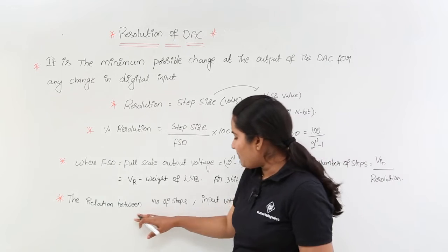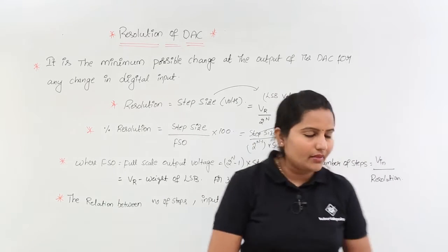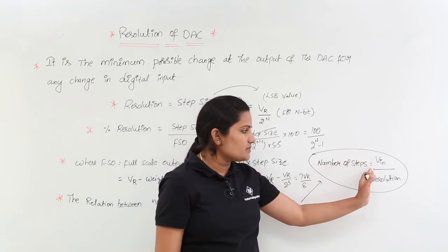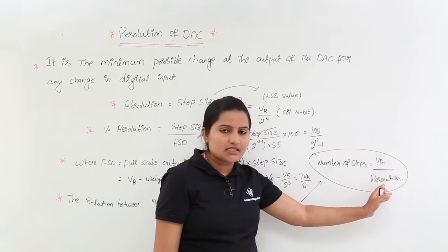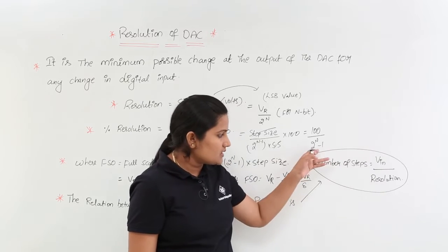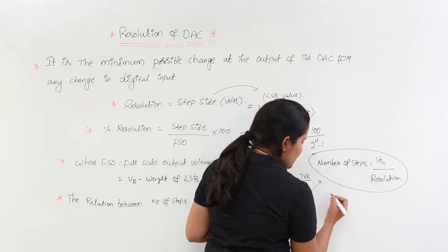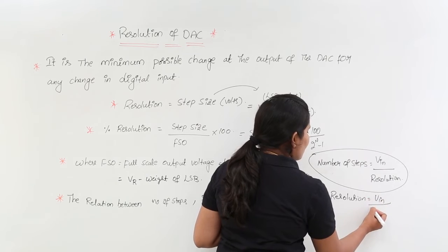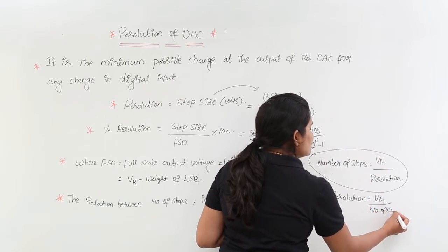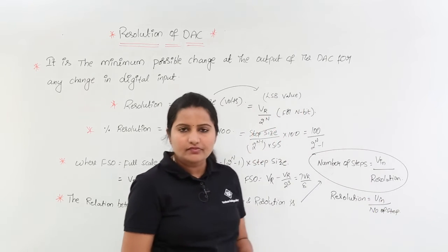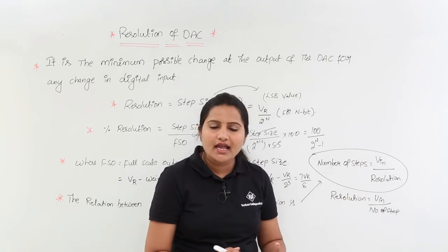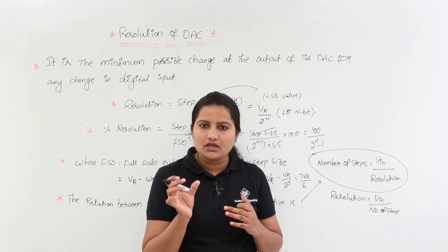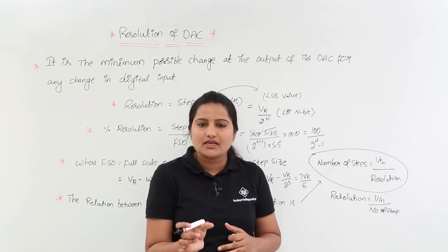The relation between number of steps, input voltage, and resolution is very important: number of steps is equal to input voltage divided by resolution. Resolution can also be calculated as resolution equals Vin divided by number of steps. If you have the total input voltage and the number of steps, dividing gives you the step size needed for each step.